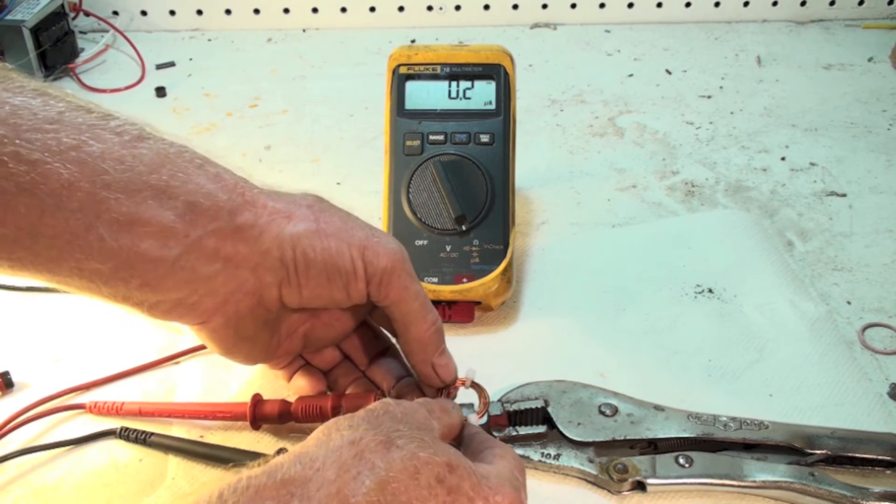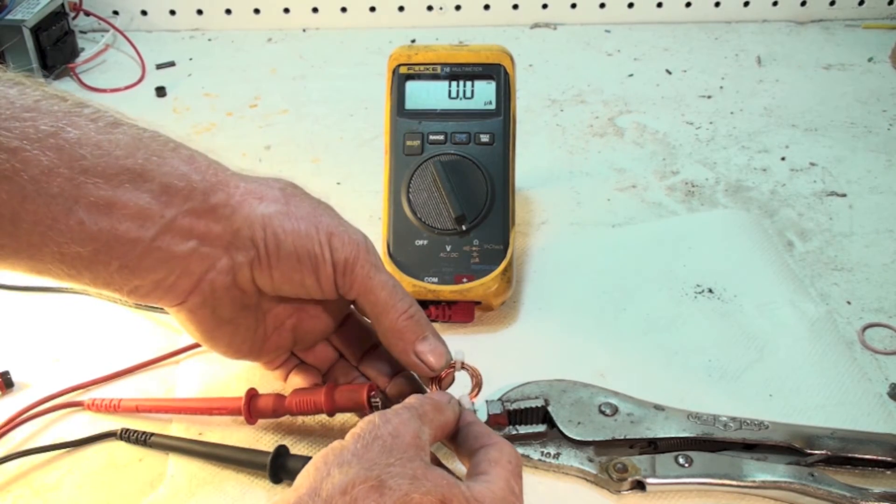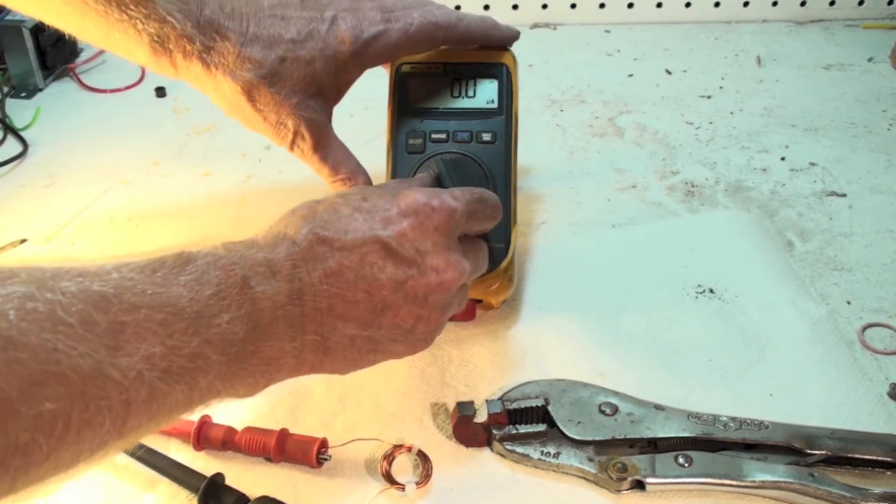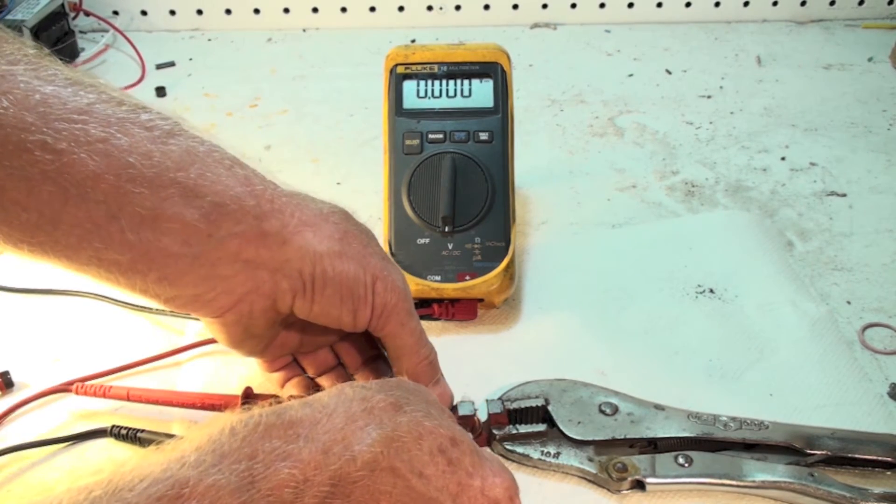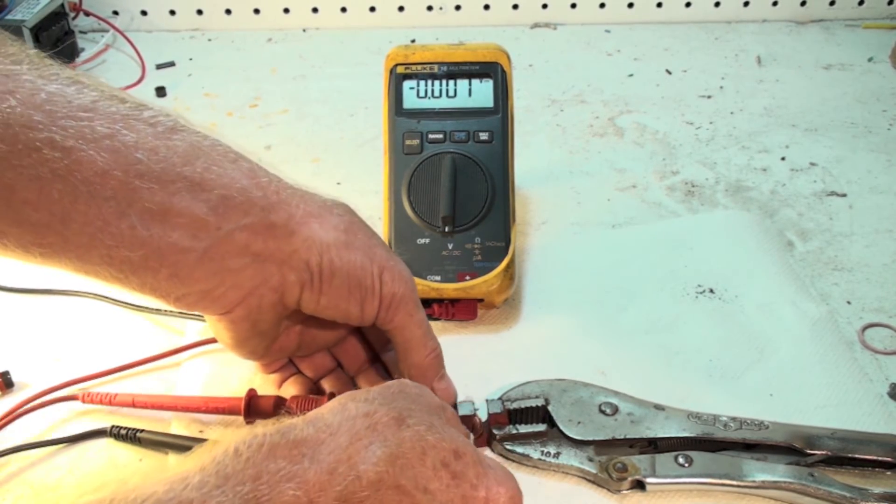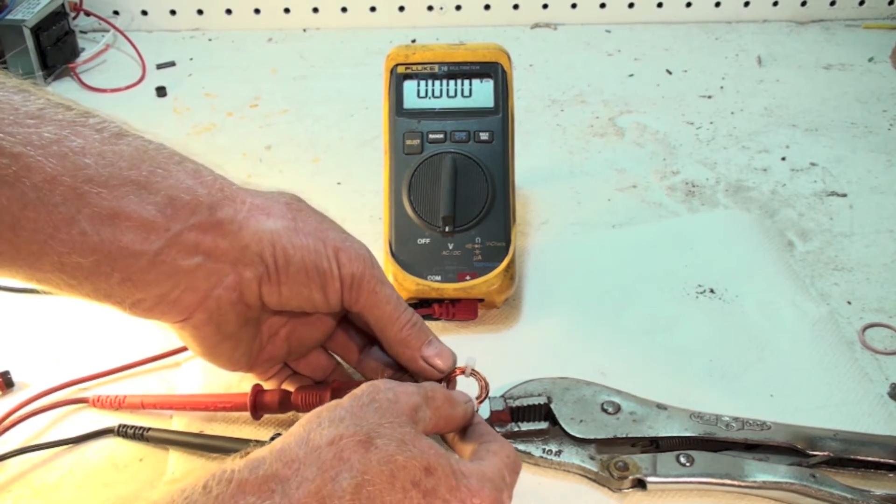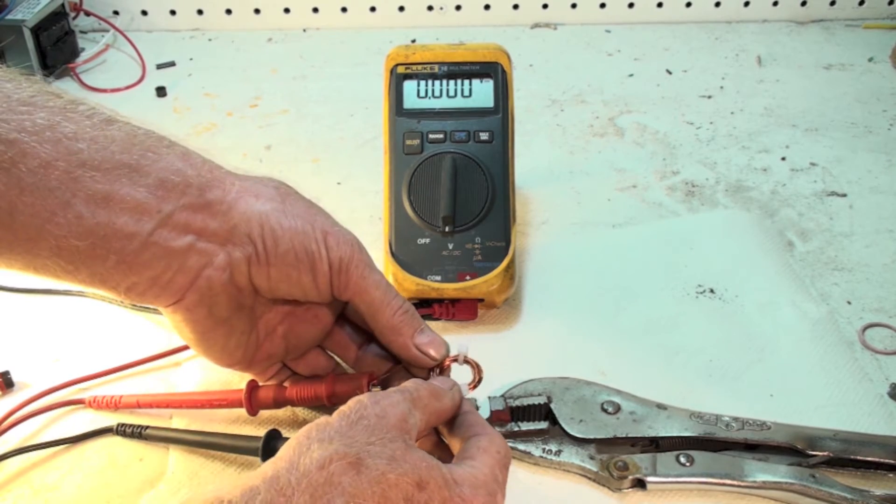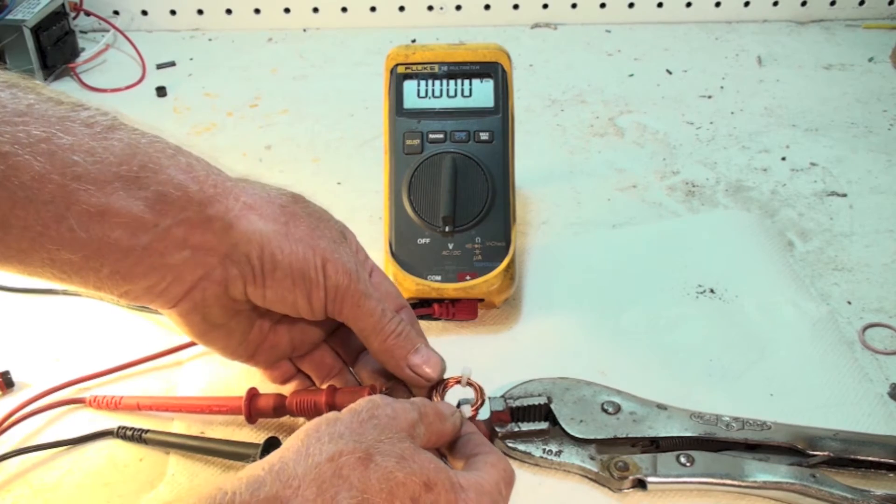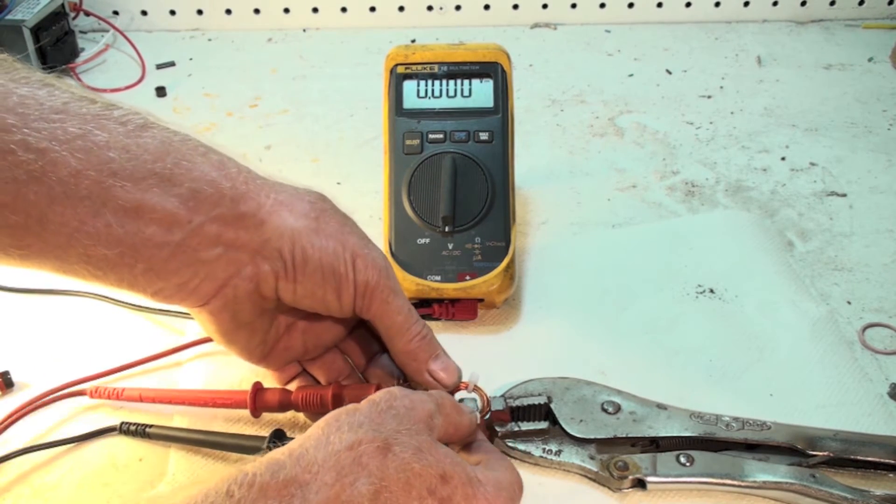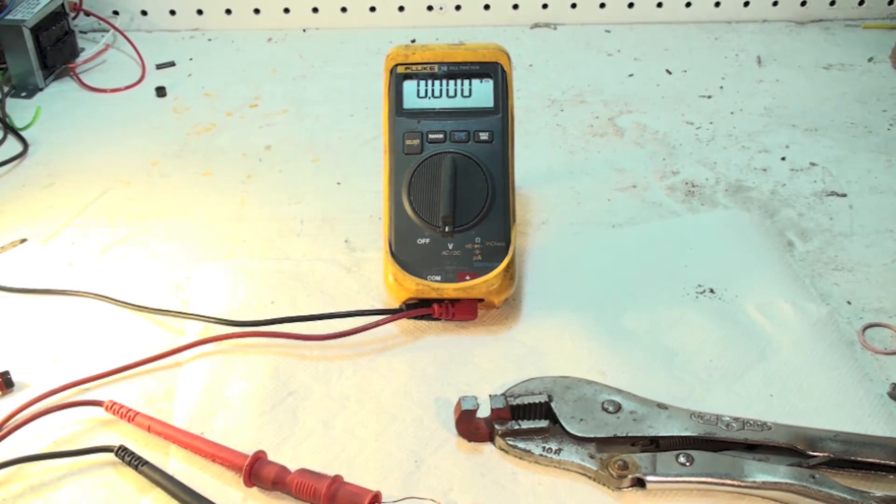Now you can see it's quite a bit higher. We have twos, fours. Now that's in microamps. Set it to DC volts. And we're getting a reading there too. Looks like we got a two. You have to move it fairly fast across there. Now you can see what happened here.